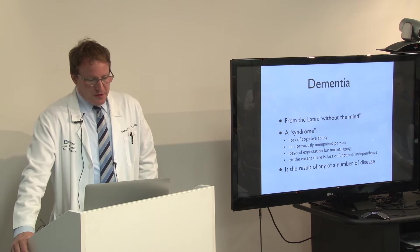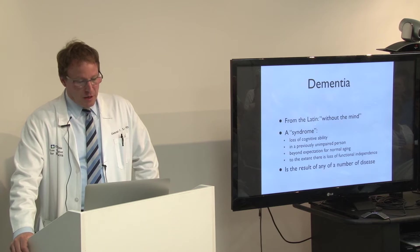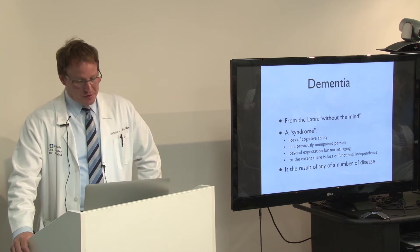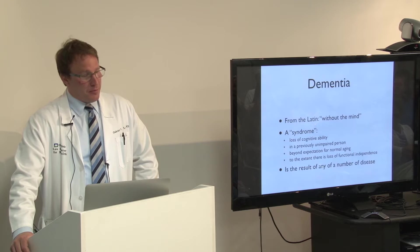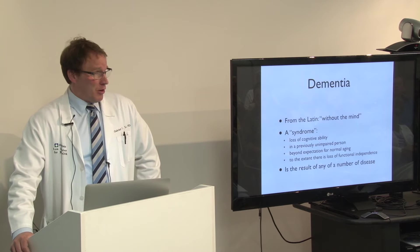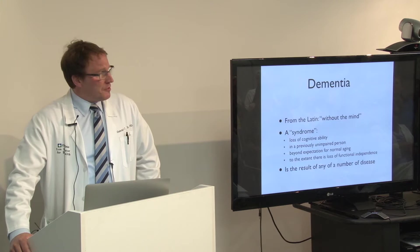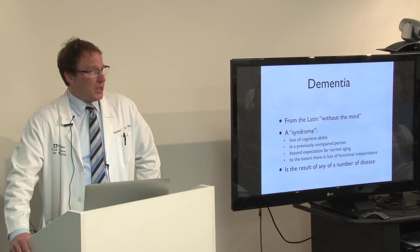I'm going to start the talk by defining the word dementia. Hopefully I'm preempting this question — it always comes up whenever we talk about anything related to Alzheimer's disease and associated disorders. What's the difference between a dementia and Alzheimer's disease? Well, the word dementia actually comes from the Latin; it means without the mind. It's not specific to any particular disease. It's a syndrome where people lose their cognitive abilities — a person who didn't have cognitive impairment before, somebody who's lived a normal life and develops cognitive difficulties beyond what we would expect for normal aging.